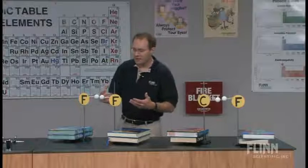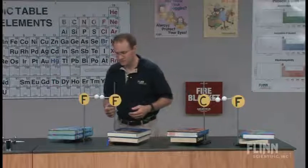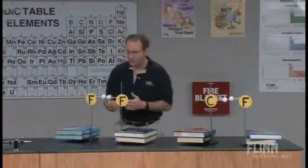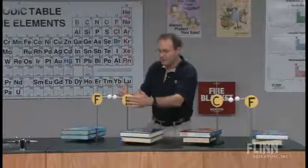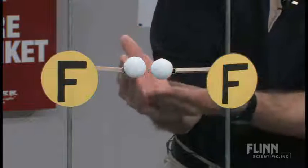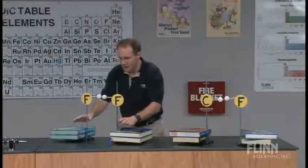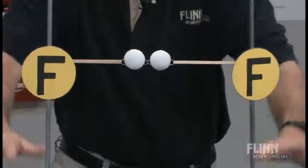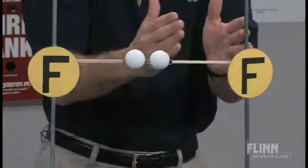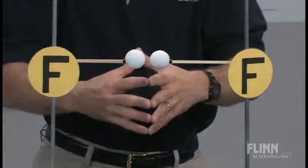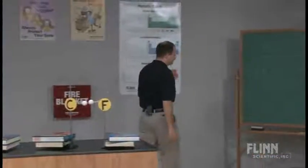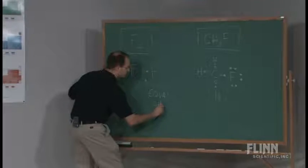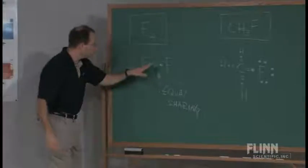If electronegativity refers to the atom's ability to attract electrons to itself, we can say this fluorine has a very high electronegativity and it's trying to pull the electrons closer to it. But much like its twin brother, this fluorine also has a high electronegativity and it's trying to attract those electrons to itself as well. So what we have here is kind of like a tug of war — I want it, you want it. And what we see is equal sharing: the electrons are located equally between the two fluorines.